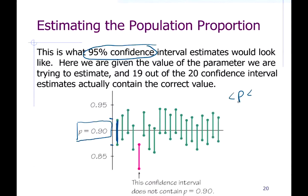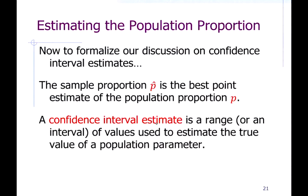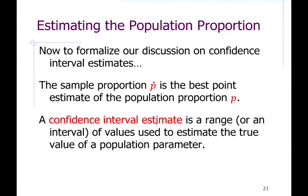Each interval estimate comes from a different sample: you choose a sample, calculate the sample proportion, choose a second sample, calculate that proportion — they'll probably be different — then a third, and so on. The point estimate is the center of your confidence interval estimate, so 20 intervals means 20 samples and 20 sample proportions, which is why some intervals are higher and some are lower.